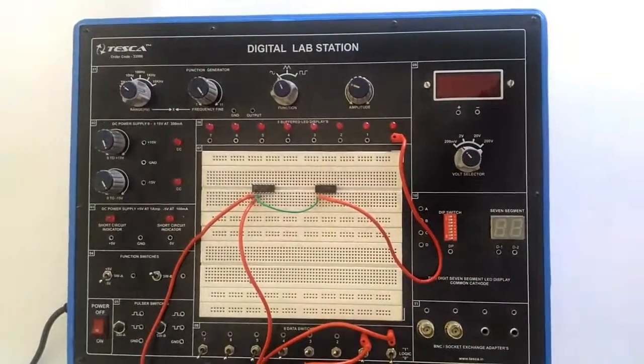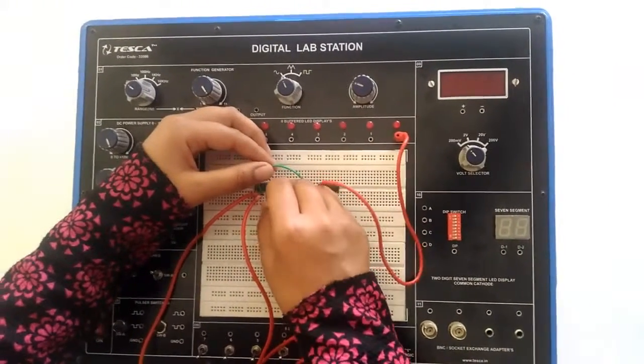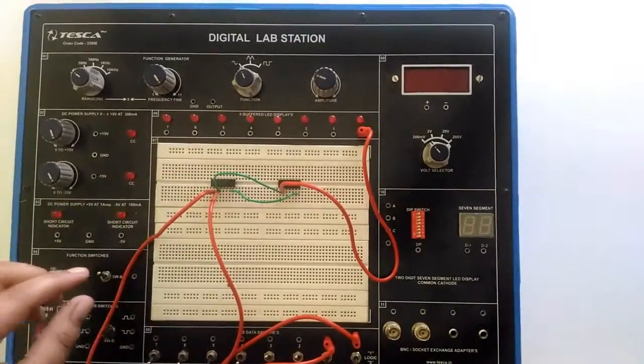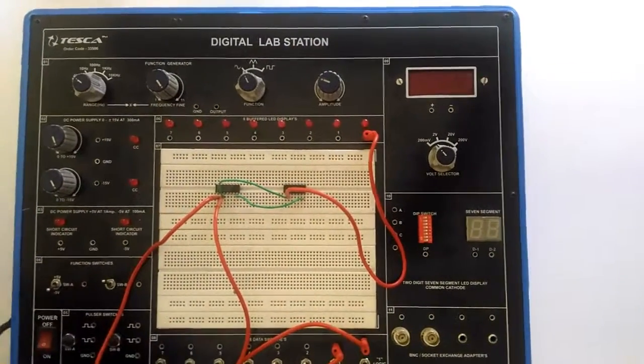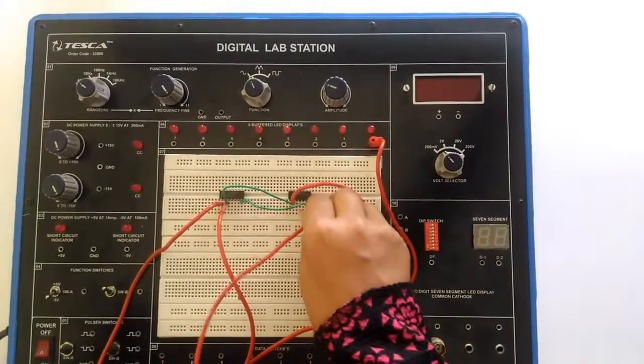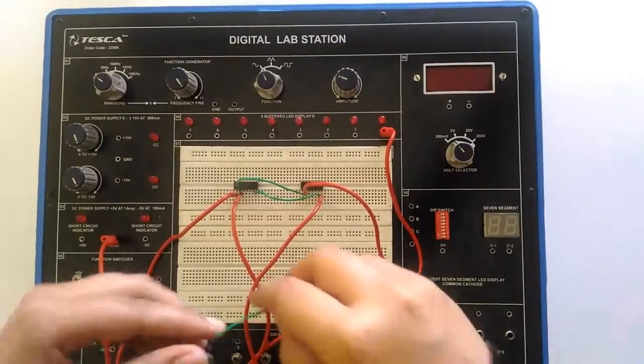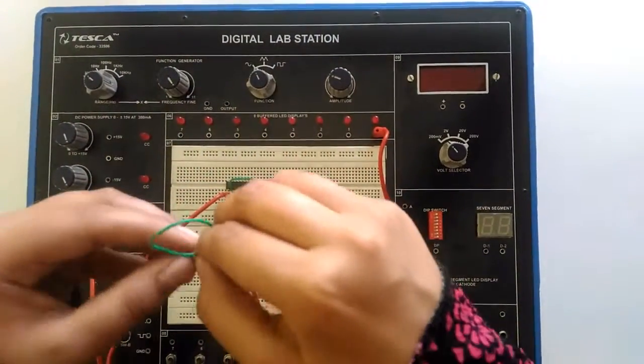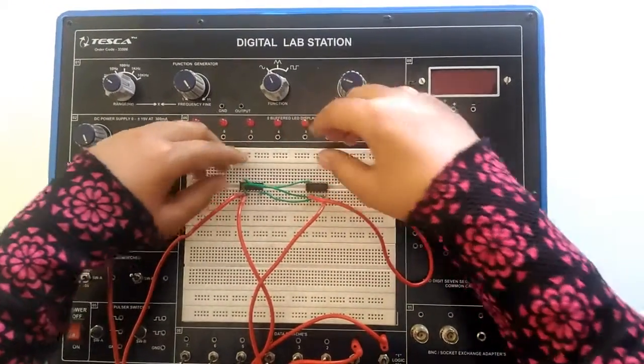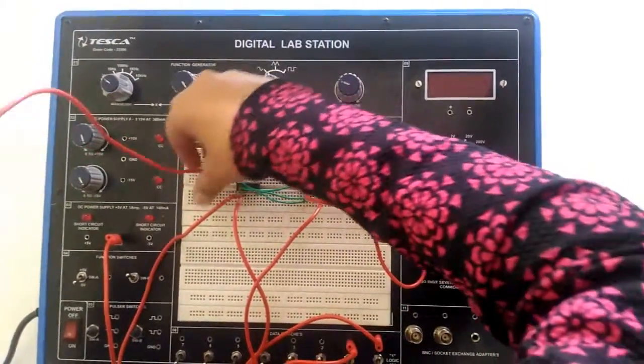Now using a jumper connect the ground that is seventh pin of both the ICs and connect them with the ground. Now connect the 14th pin of both the ICs and then connect it with the power supply.